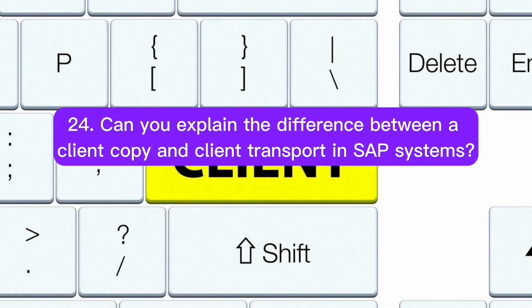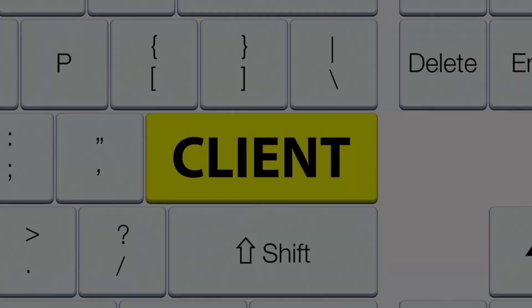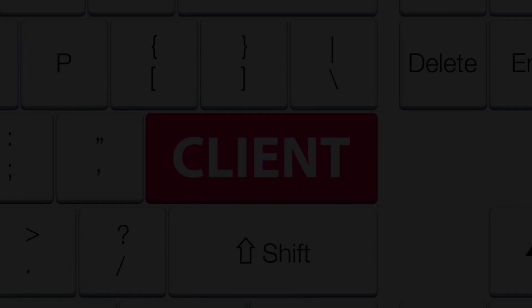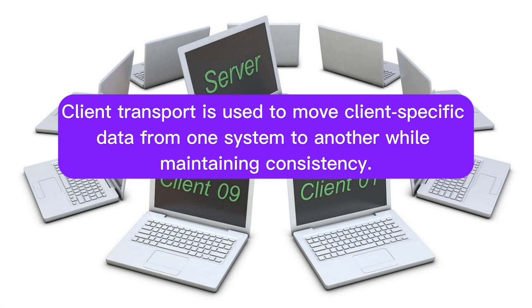Question 24: Can you explain the difference between a client copy and client transport in SAP systems? Client copy involves copying client-specific data and objects within the same system. Client transport is used to move client-specific data from one system to another while maintaining consistency.